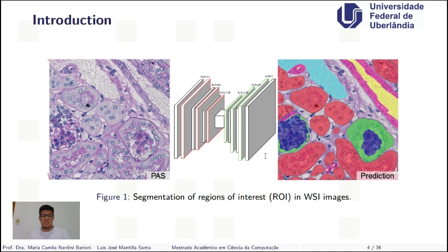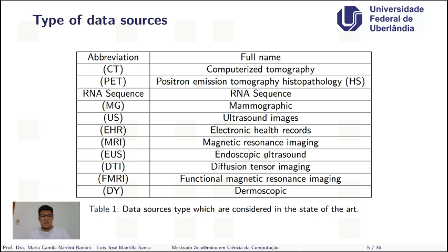As we can see in this image, the principal objective of a CAD system is to get raw data, process it, and finally get a prediction. For example, in this image we can see a WSA image, an autoencoder neural network, and finally the label assigned by the autoencoder.